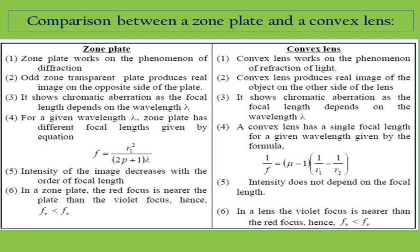There are some similarities and dissimilarities between a zone plate and a convex lens. The first is that a zone plate works on the phenomenon of diffraction, whereas in the case of a convex lens, it works on the phenomenon of refraction of light.